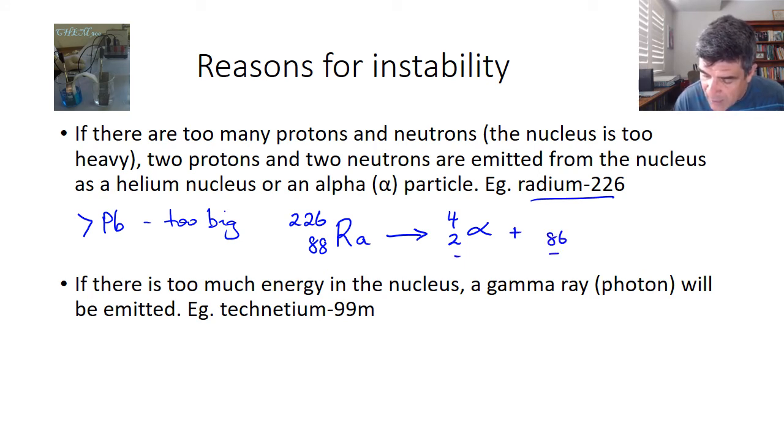Again, I'm going to do my calculations. 86 plus 2 is 88, and 222 plus 4 is 226. This gives me the element radon.